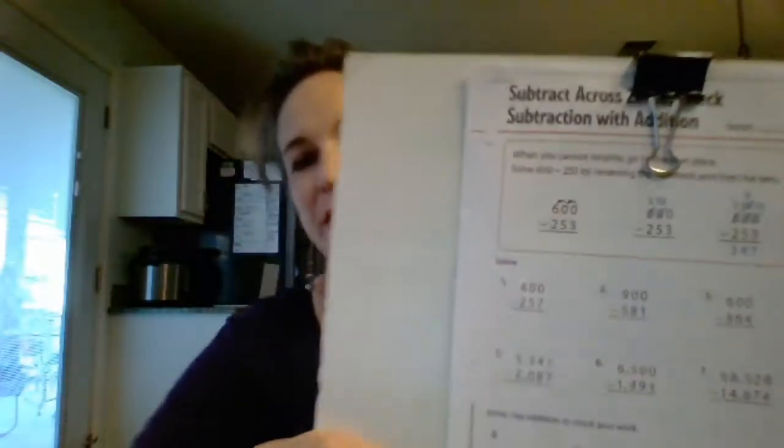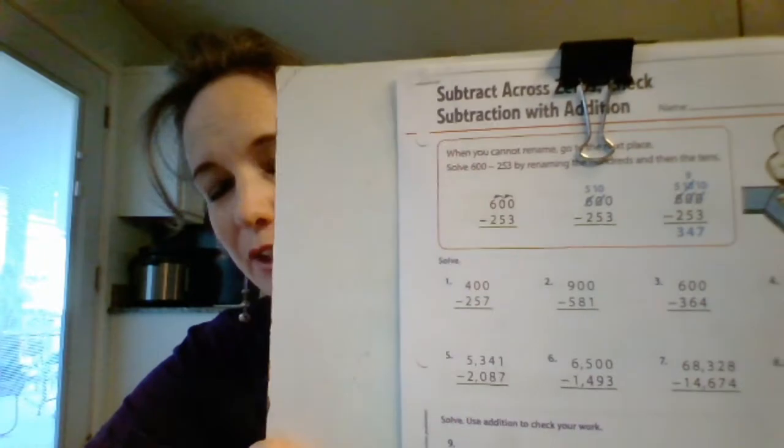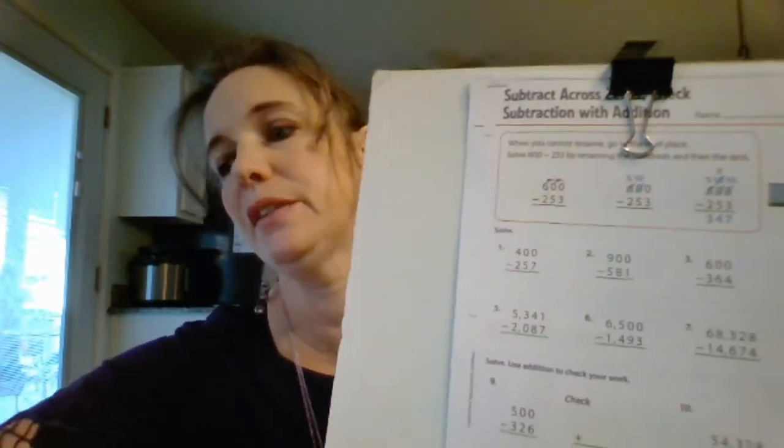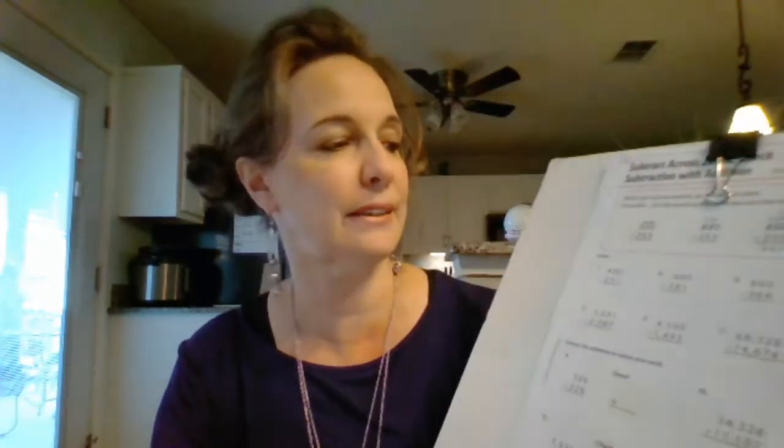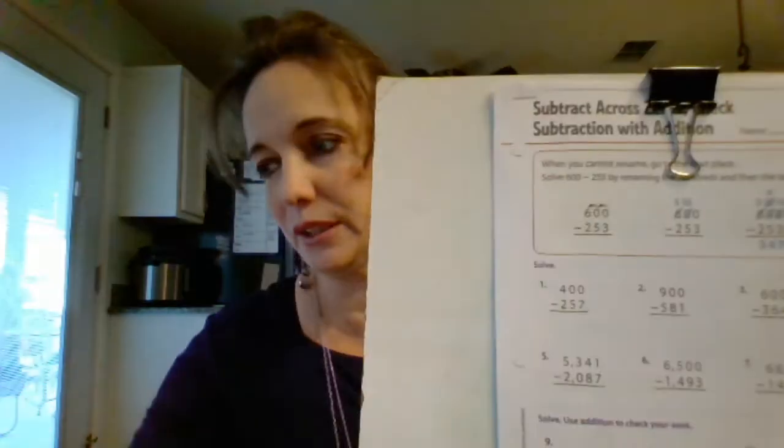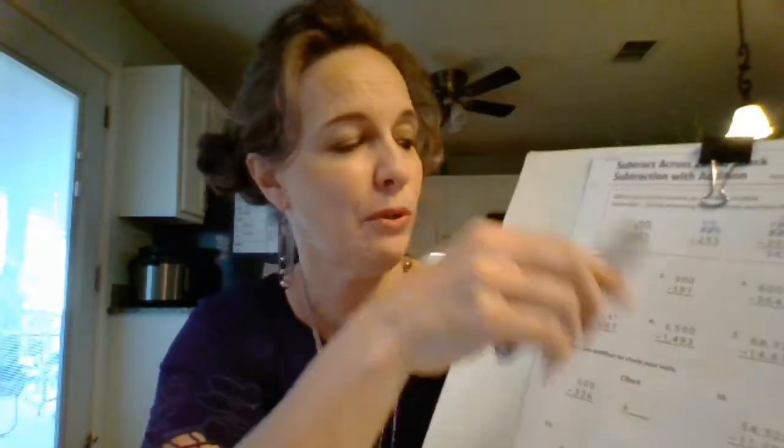So if you look, the first one is 400 minus 257. You cannot take seven away from zero, so you have to fix it. But when you go to the next place over, which is the tens place, there's no tens there, so you've got to fix it.